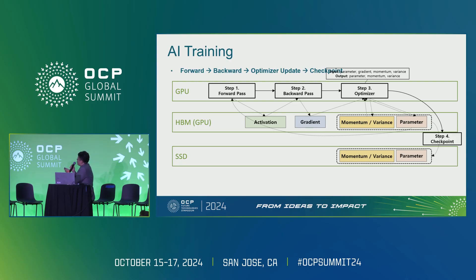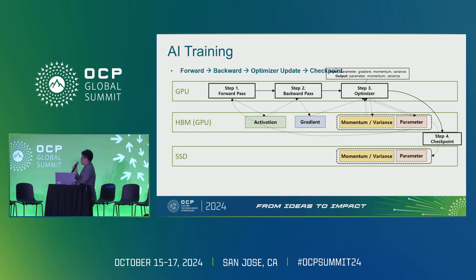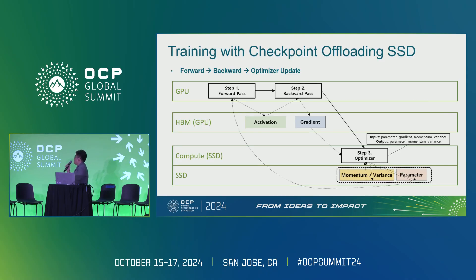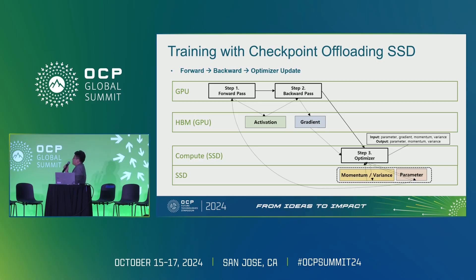The momentum, variance, and parameters are the output of the optimizer step, and the input to the optimizer step is the gradient, momentum, and variance from the previous iteration. We propose uploading the optimizer step into the SSD so that the optimizer can work separately from the GPU. The GPU sends the gradient value and reads the updated parameters for the next forward pass and next iteration.